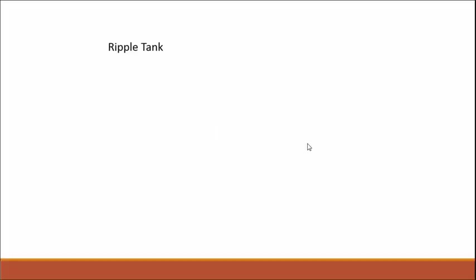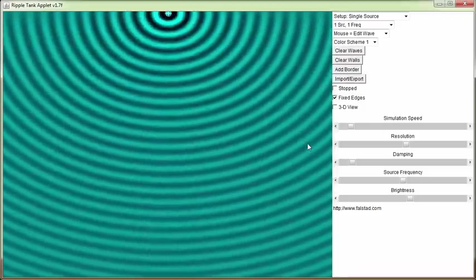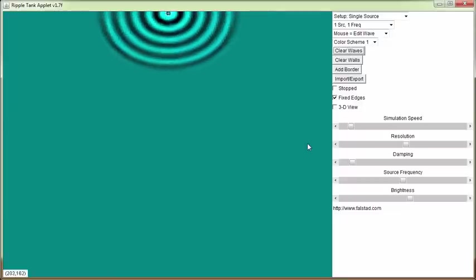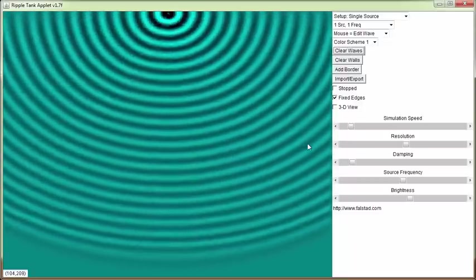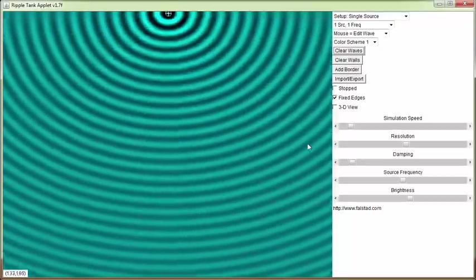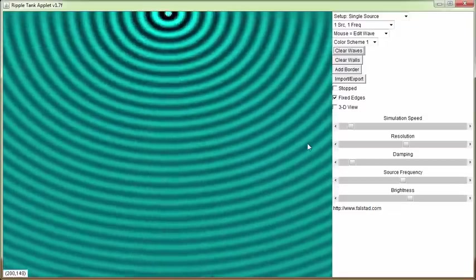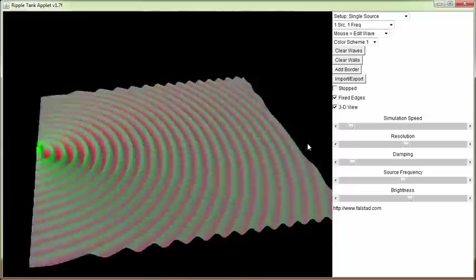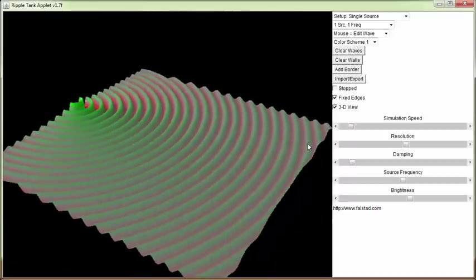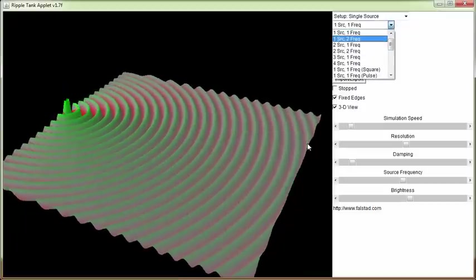Now we can get even more complicated interference patterns. Let me pull up a different thing here. This is called a ripple tank. Imagine you have water dripping into your sink and your sink is full of water. You'd get this ripple effect of circular waves propagating out. And I can do 3D view here too. So we get these cool wave patterns.